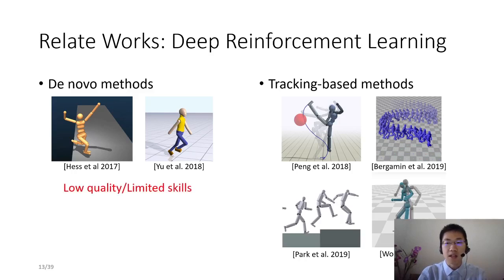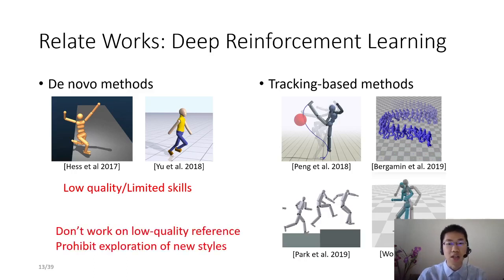Deep reinforcement learning is a relatively new and effective approach to learn physics-based motor skills. De novo methods synthesize motor skills from scratch and usually generate unnatural jerky motions. When kinematic reference motions are available, a more effective approach is to add an imitation reward term to encourage tracking of the reference. The imitation reward, however, shares the same weakness with previous tracking-based methods. That is, it doesn't work well on low-quality reference and prohibits exploration of more stylized skills that are different from the reference. We replace reference tracking with spacetime bounds that are more supportive to style exploration. In addition, spacetime bounds also improve the learning robustness when the reference motion quality is low.